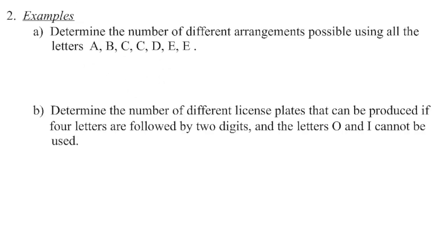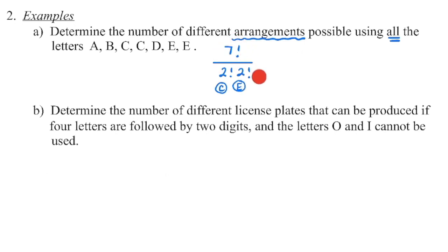In our first example, we are asked to determine the number of different arrangements — that's your keyword, so highlight it. That tells us we need a permutation using all the letters A, B, C, C, D, E, E. We're arranging seven letters and there are duplicates, so we arrange all seven and divide out the duplicates. Remember to bracket this when entering it into your calculator. We end up with 1,260 different arrangements. No conditions apply, but we must account for the duplicates by dividing them out.